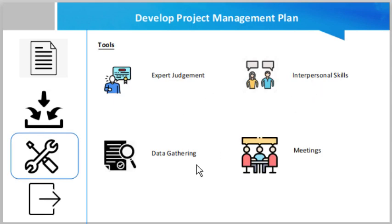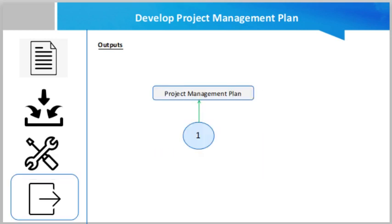The tools for this process include expert judgment, interpersonal skills, data gathering techniques, and meetings. The output of the Develop Project Management Plan process is the project management plan — a document that describes how the project will be executed, monitored, controlled, and closed. It integrates and consolidates all subsidiary management plans, baselines, and other information necessary to manage the project.